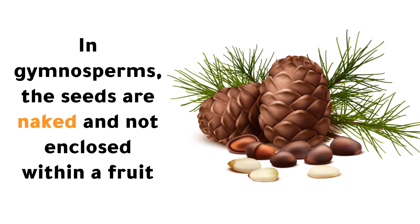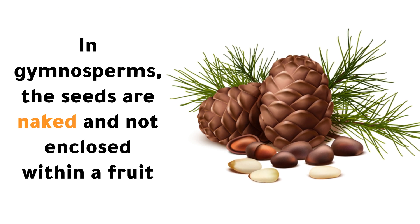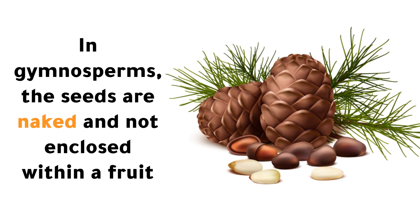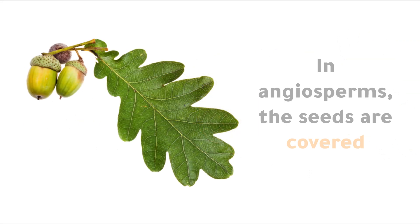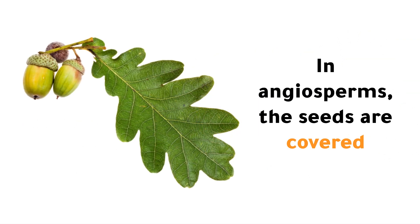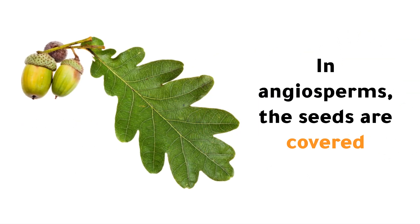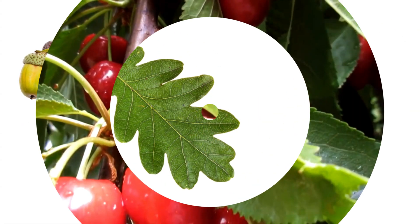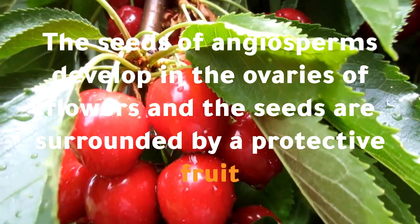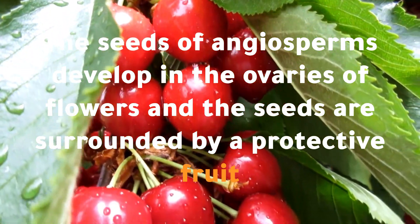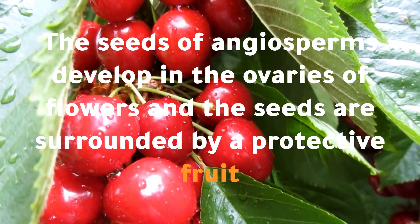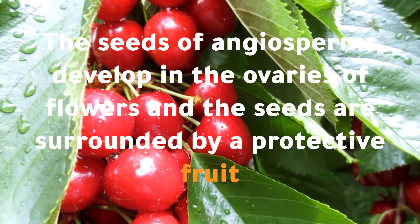In gymnosperms, the seeds are naked and not enclosed within a fruit. In angiosperms, the seeds are covered. The seeds of angiosperms develop in the ovaries of flowers, and the seeds are surrounded by a protective fruit.